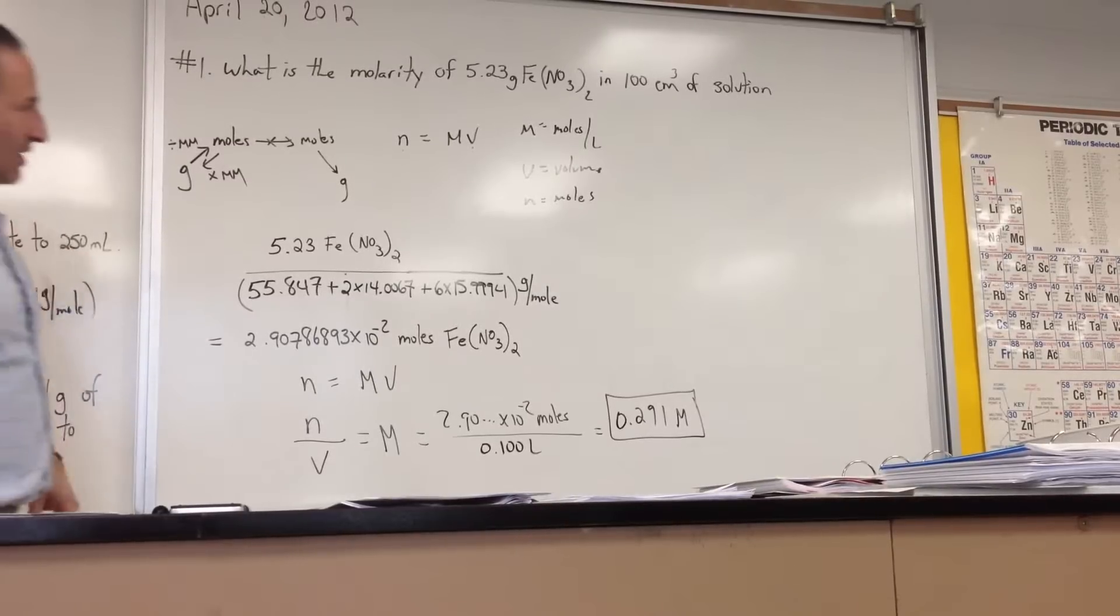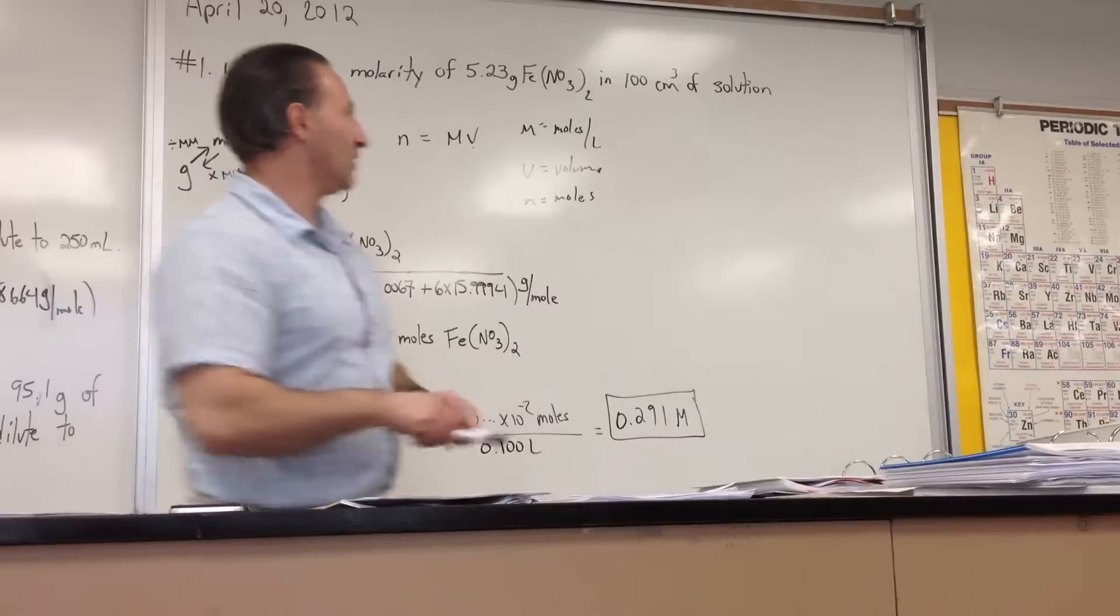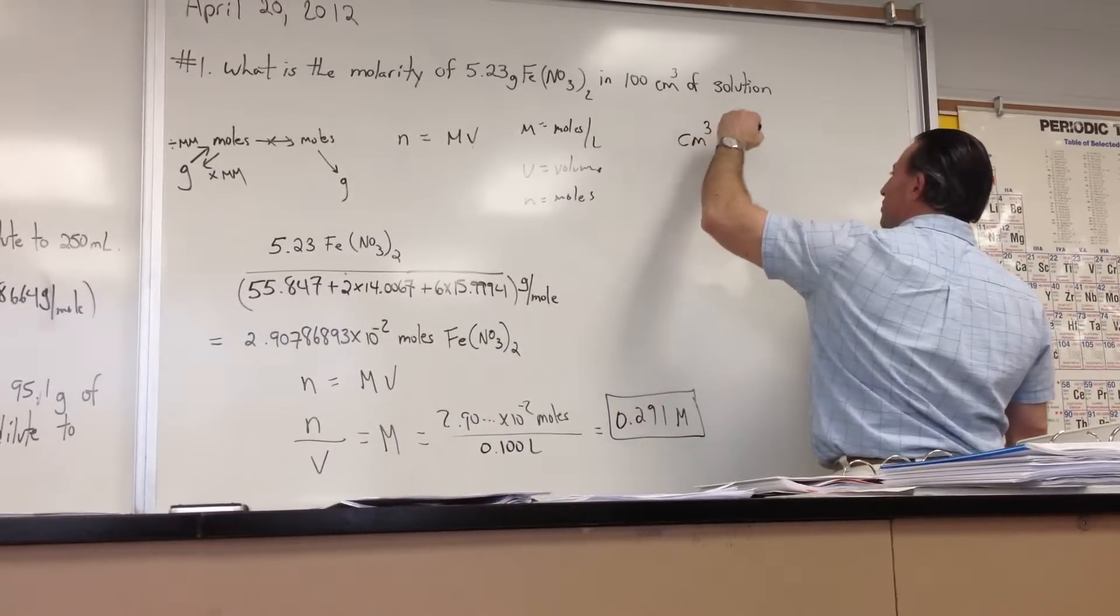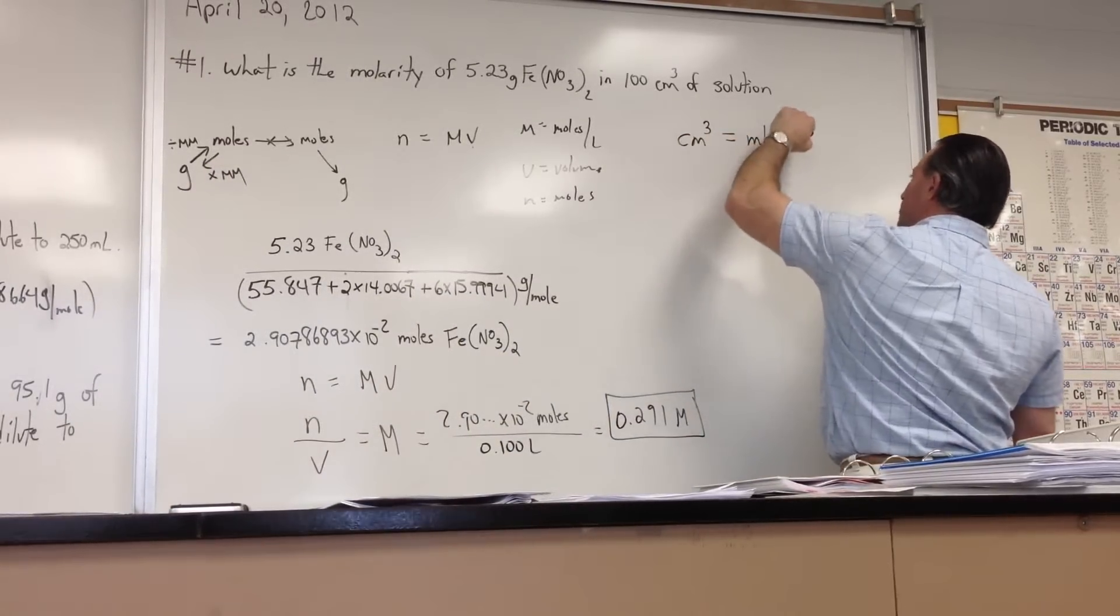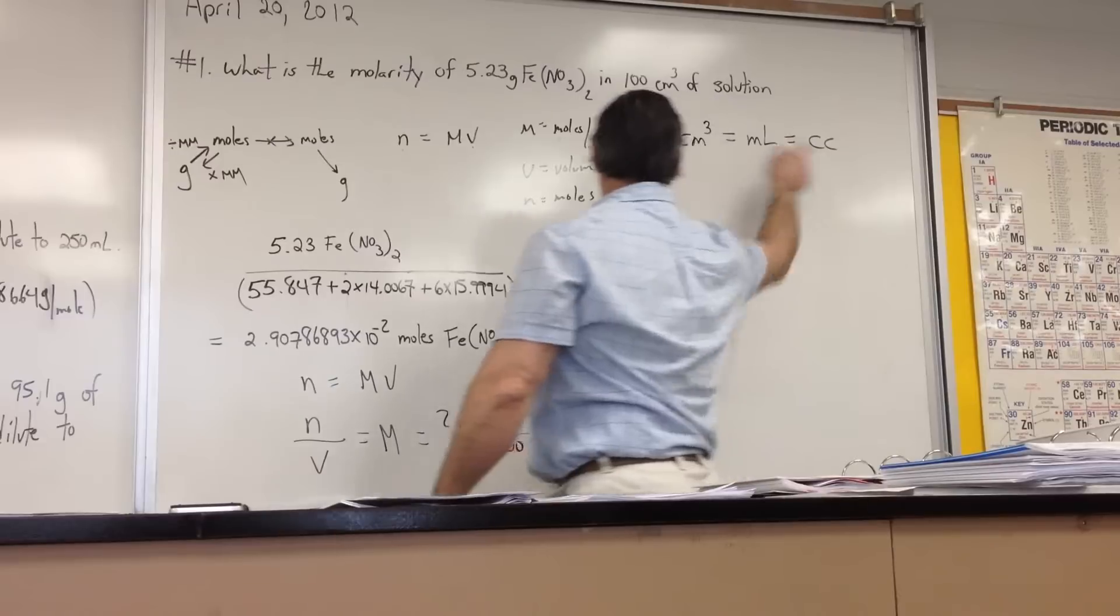One of the things we have to recognize is that centimeters cubed is equal to milliliters. In fact, they're interchangeable units - centimeters cubed and milliliters. You'll also sometimes see cc written on the side of a syringe, but it's all the same thing.